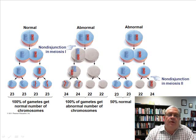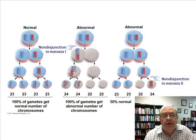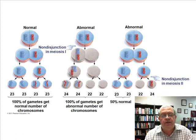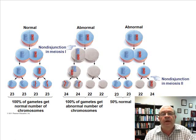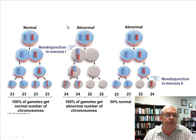The subject is Down syndrome, but before we talk about Down syndrome specifically, let's talk about a more general situation that results in Down syndrome and other chromosomal abnormalities. The term is called non-disjunction in meiosis.